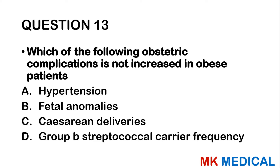Question 38: Most common cause of first trimester abortion is: A — chromosomal anomalies. B — syphilis. C — rhesus isoimmunization. D — cervical incompetence. During the first trimester, organogenesis is occurring. If there's a problem in the genetics or DNA, the body will reject the pregnancy. Infections, cervical incompetence, and rhesus isoimmunization tend to affect later stages. The answer is A — chromosomal anomalies.